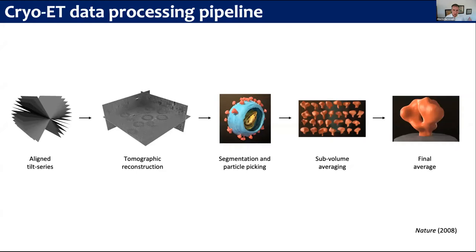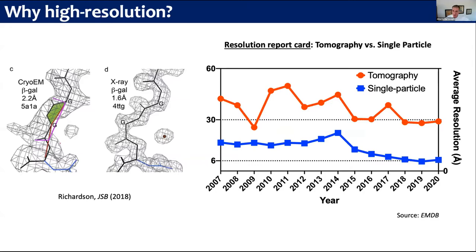I want to give a little bit of motivation. Why do we need higher resolution? That's pretty obvious. If you came to Jane's talk a couple of weeks ago, she made a very good point that obviously the higher resolution we can achieve, then we're going to make fewer errors in our model building. My lab is actually neighbors with Jane's, so we talk about this all the time. The main reason why we want to improve resolution is so we can determine the structures in a more accurate way and make fewer errors.